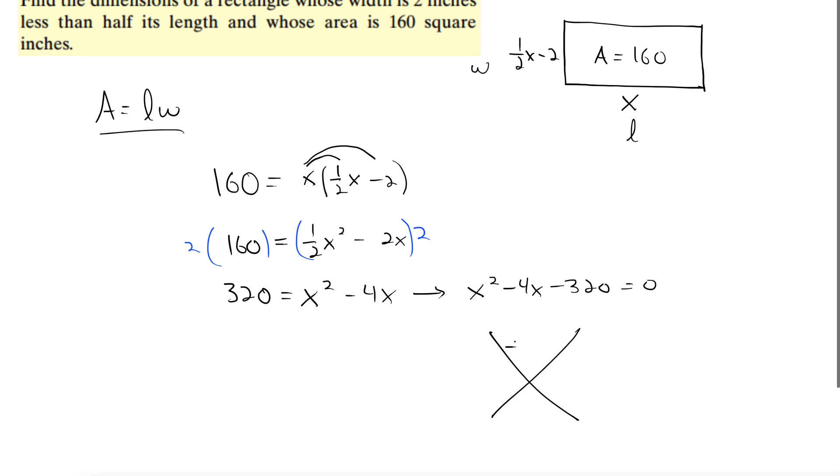Remember the c term goes up here, 320. The b term goes down here. So we need factors of 320 that add to negative 4. I don't want to start from the very beginning at 1 and 320, right? I don't want to go 1 and 320, you know, 2 and 160, all that stuff. That's going to take all day.